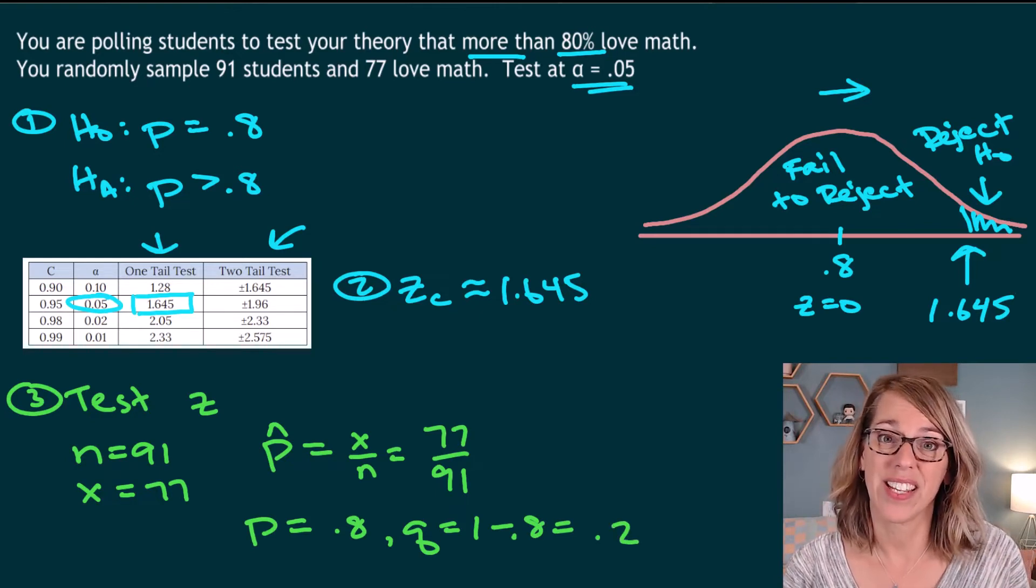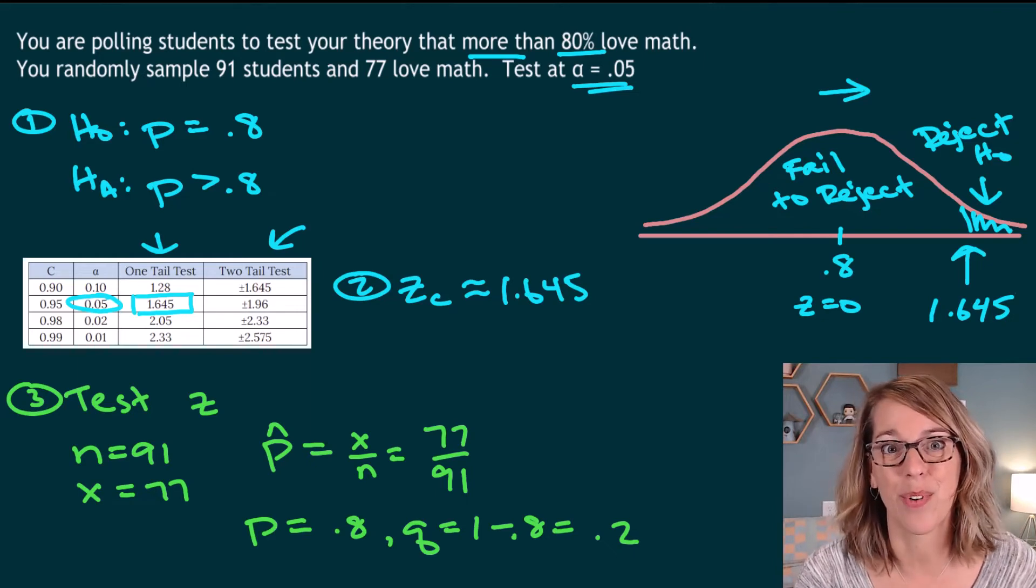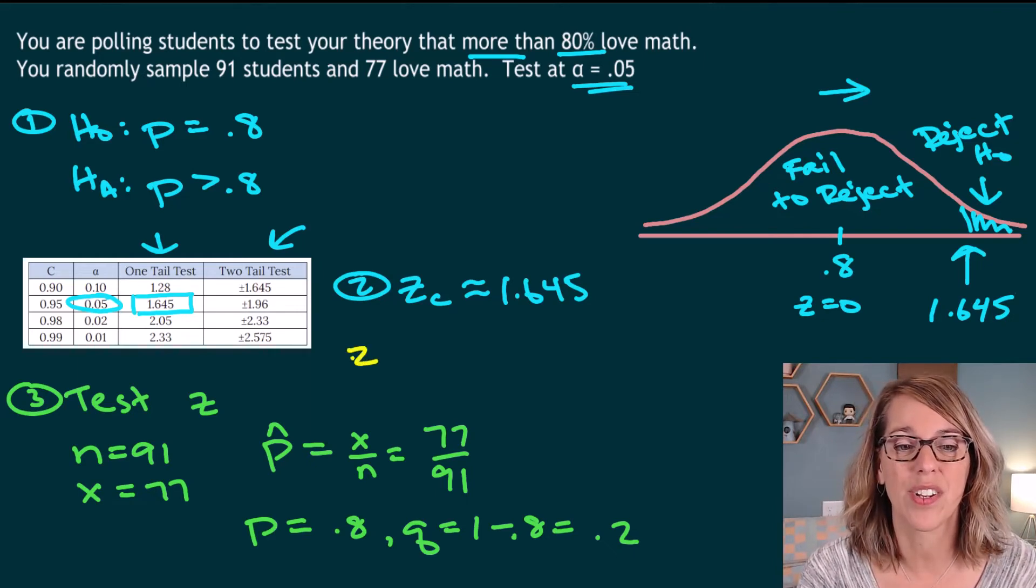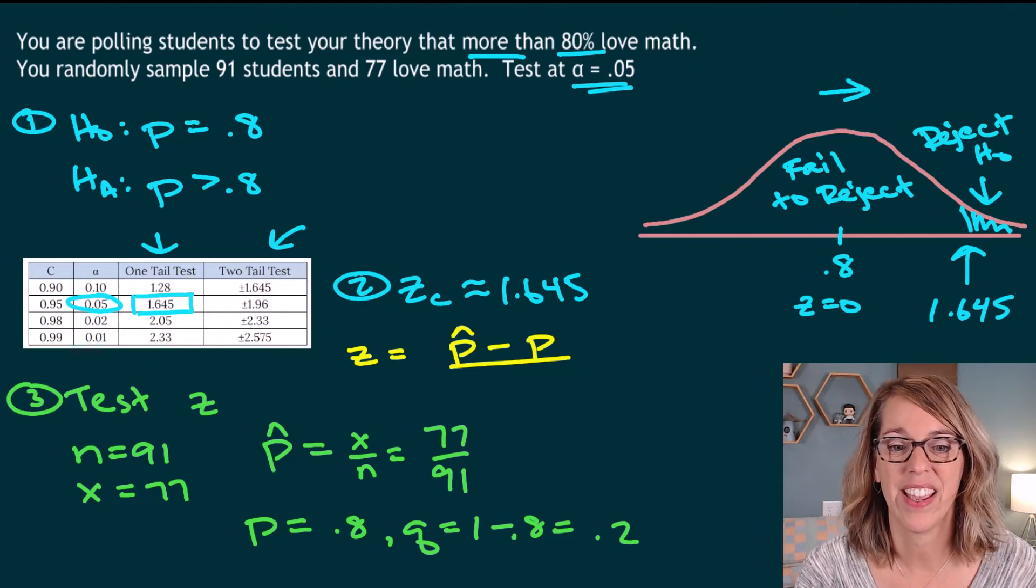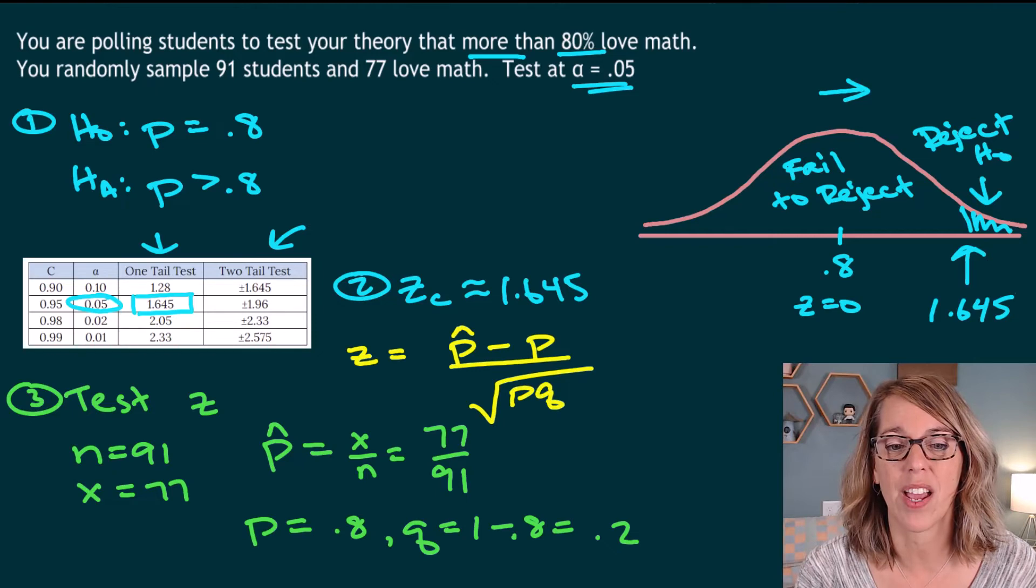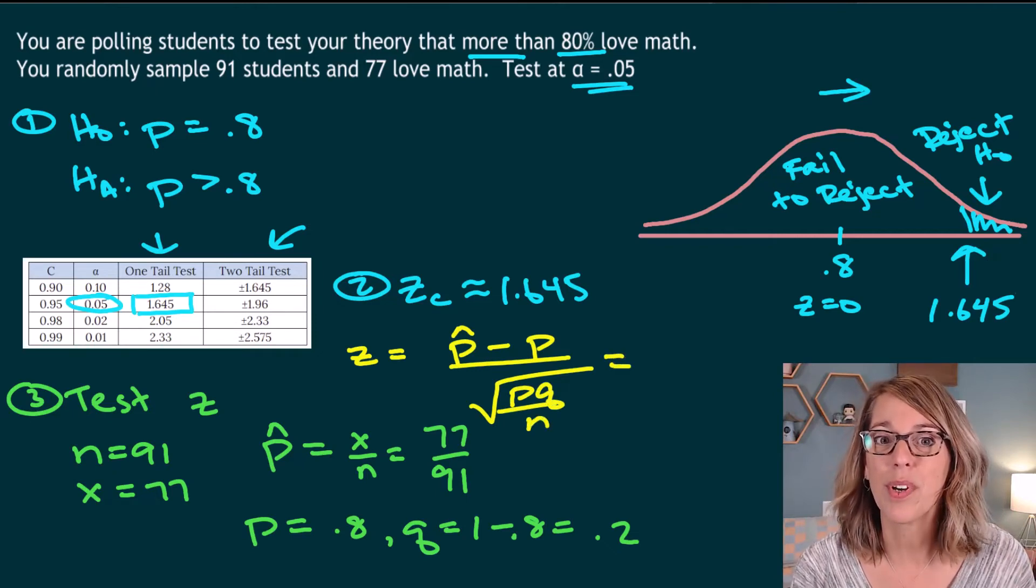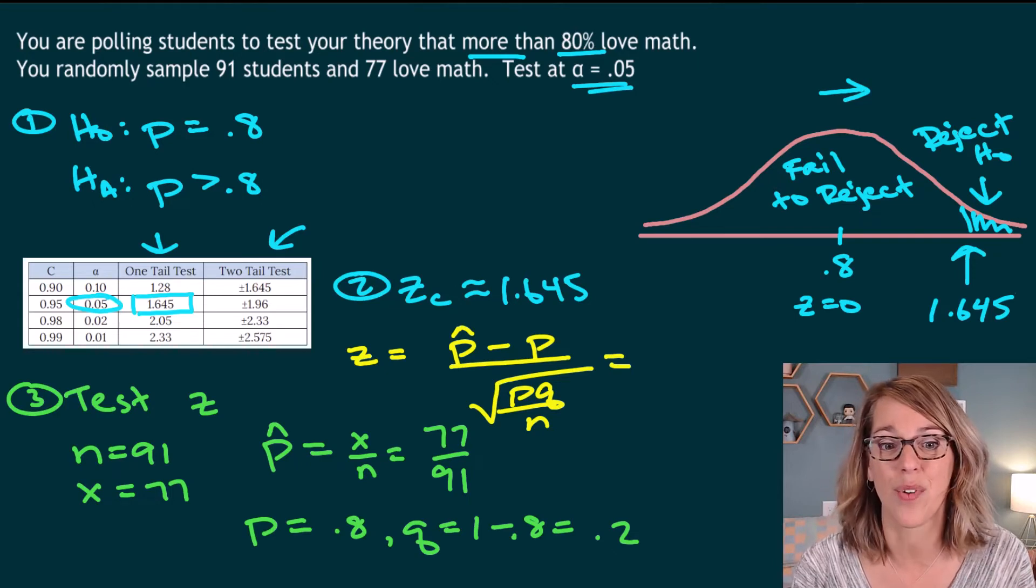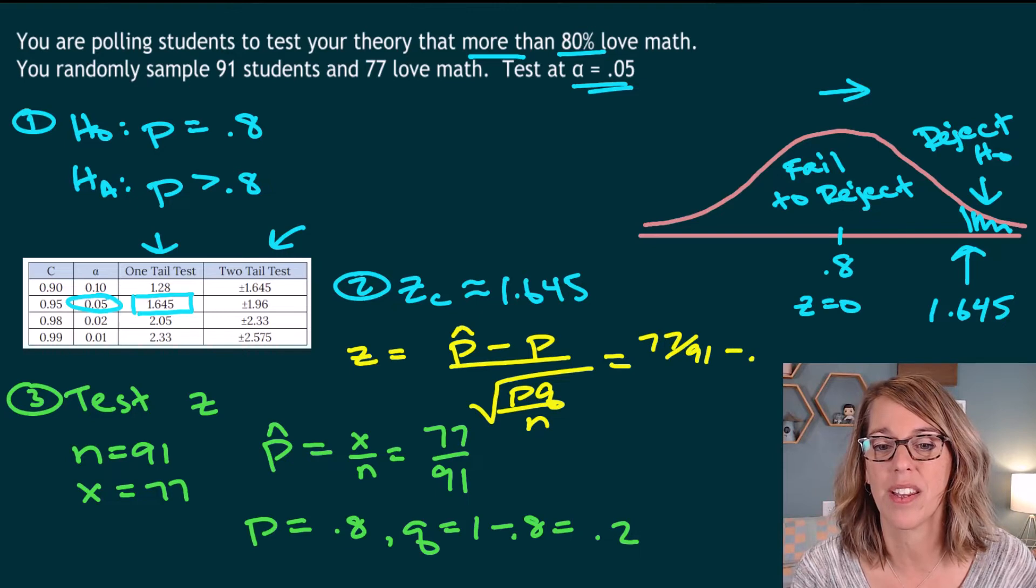Now I've got everything that I need to compute my test value by hand, and then I'll show you how to do it more easily on the calculator. So by hand, you're going to use this formula. In the numerator, you're going to take your sample proportion. So P hat minus P, and then in your denominator, we've got the square root of, this is going to be P times Q, all divided by N.